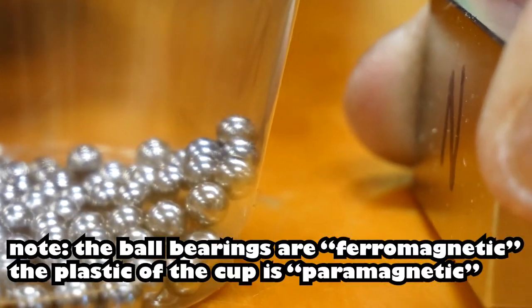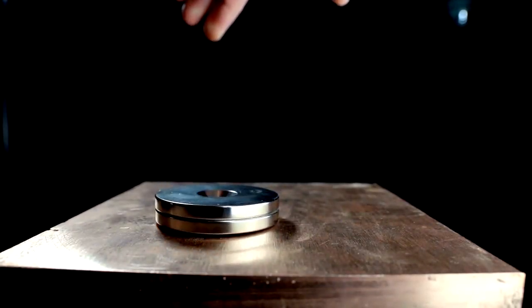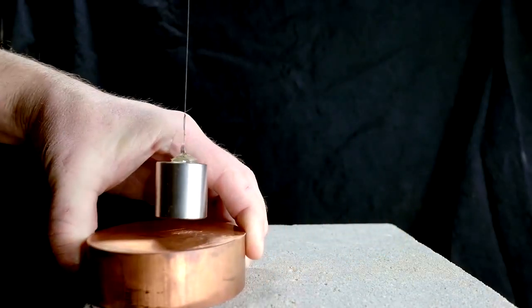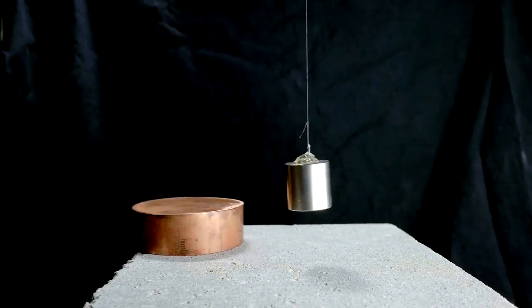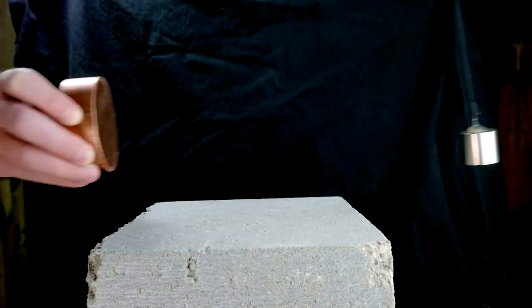But there is one last classification, diamagnetic. This means repelled by both poles. These substances actually seem to have a lower magnetic permeability than vacuum. They're even less magnetically permeable than empty space.